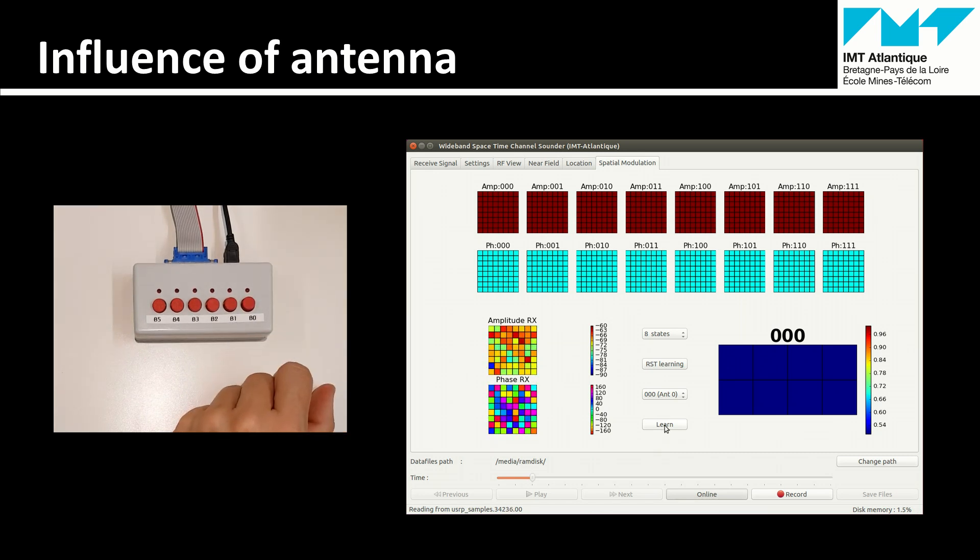If we learn the first antenna, you have a good correlation, as you can see here. If we move to the second antenna, the correlation disappears. That's the basic idea.